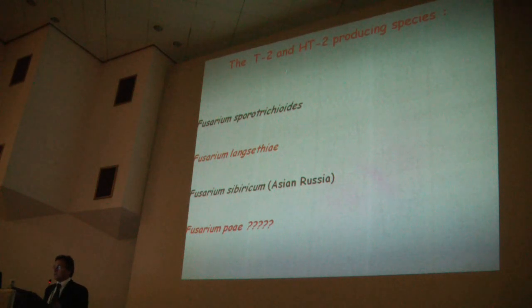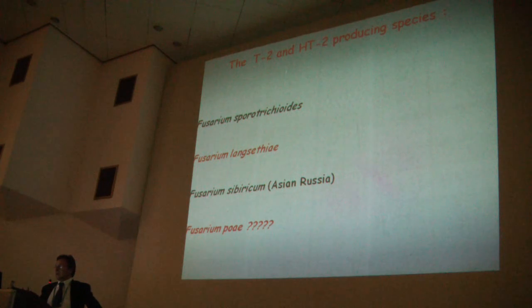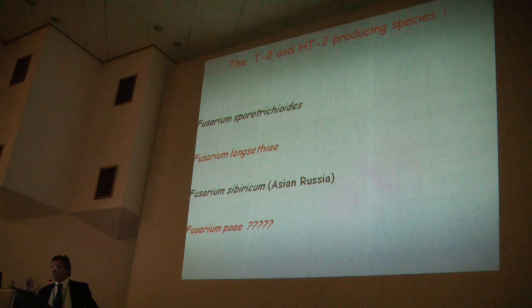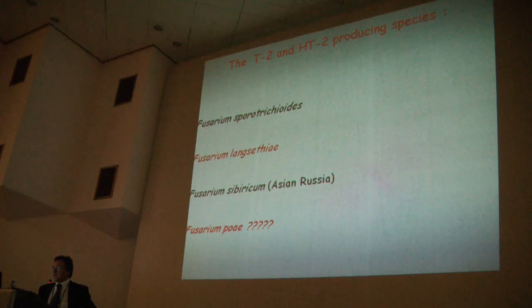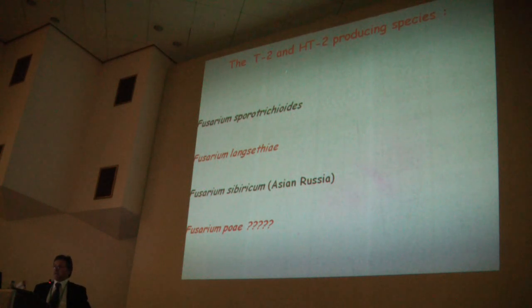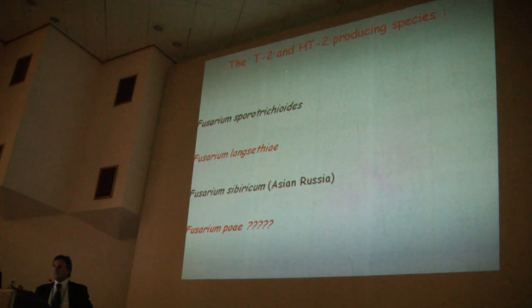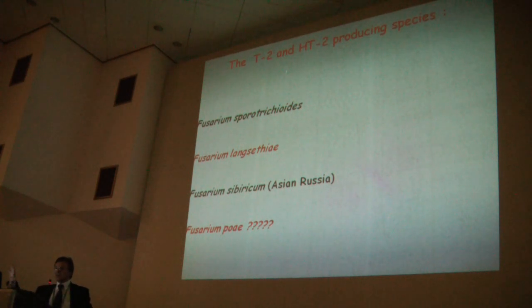Regarding the T2 and HT2 producing species, the largely predominant species are well-established T2 and HT2 producers. Fusarium sibericum and Fusarium poae are two other species related to T2 and HT2 production. While Fusarium poae is not actually a producing species — I will explain why shortly — Fusarium sibericum is a new species described in Russia in the Asian part.